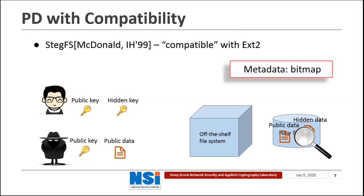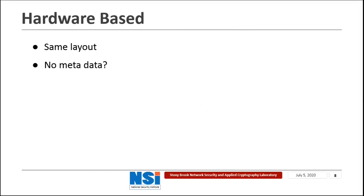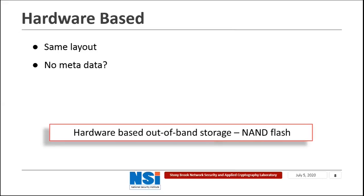However, STAGFS is not a PD scheme with compatibility as it needs to store some metadata — a bitmap — in the storage device. The existence of this bitmap will reveal to adversaries that the user is using STAGFS rather than EXT2. A PD scheme with compatibility should have the same layout as another off-the-shelf storage scheme, which means no metadata is allowed to be stored for the hidden data. This seems hardly possible. However, NAND Flash provides us such an opportunity because it provides hardware-based out-of-band storage capacity.